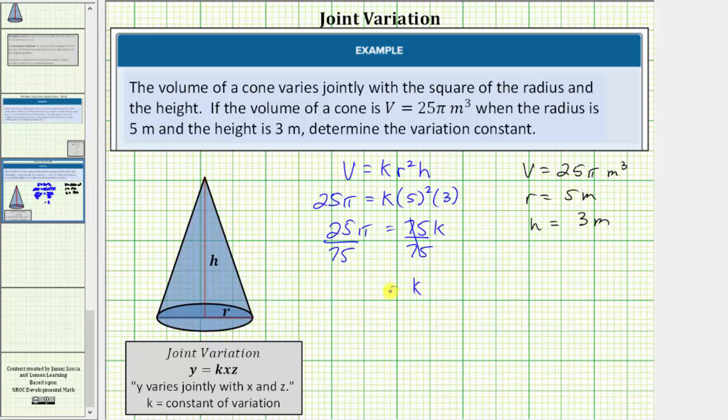So here the fraction simplifies. 25 and 75 share a common factor of 25. There are three 25s in 75 and one 25 in 25. And therefore the left side simplifies to one-third π.